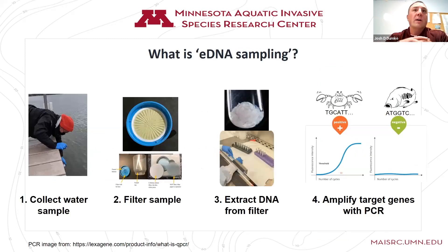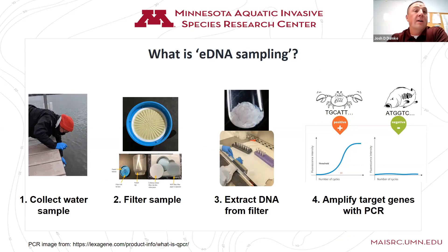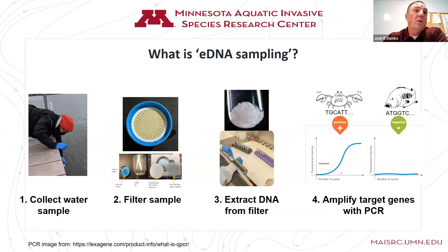Before we go through what we've done and what we're finding, I need to give a synopsis on what I mean by eDNA sampling. It starts with collecting a water sample. You go to a lake, collect a water sample, then filter that water so that all of the suspended bits of DNA and algae and all kinds of things in the water get stuck onto this filter. That filter is cut in half — half is saved as a backup or archive.